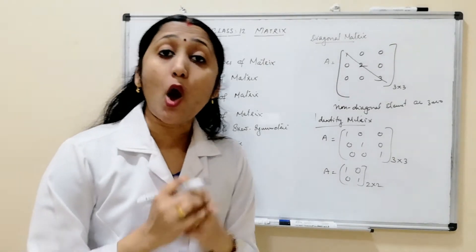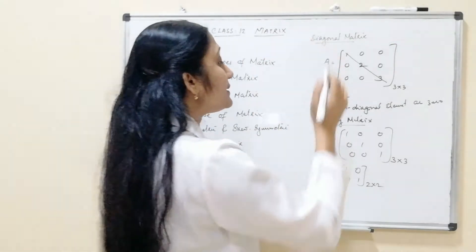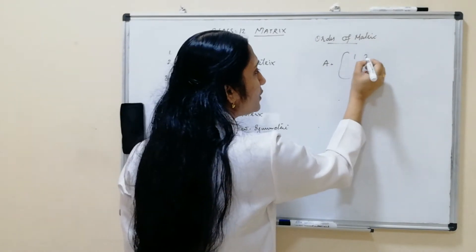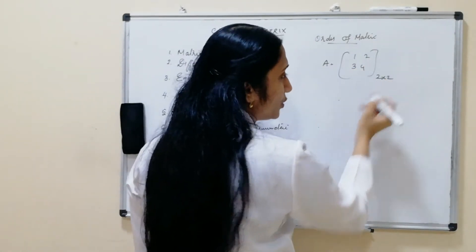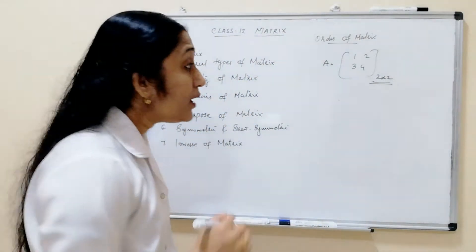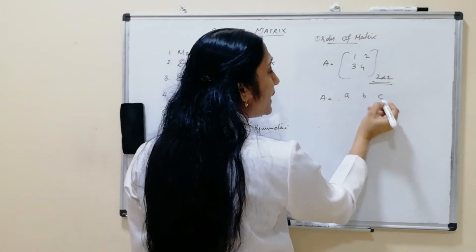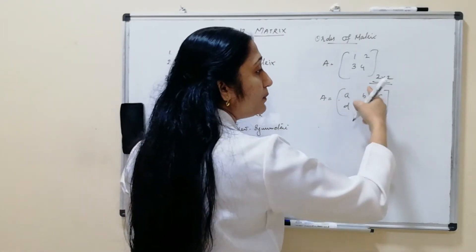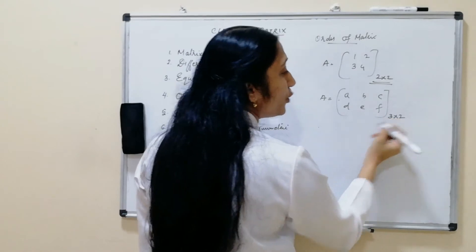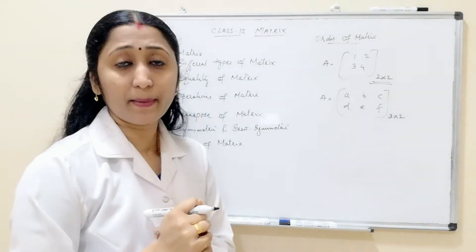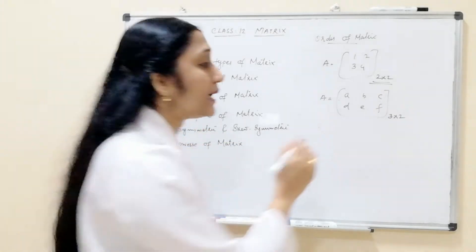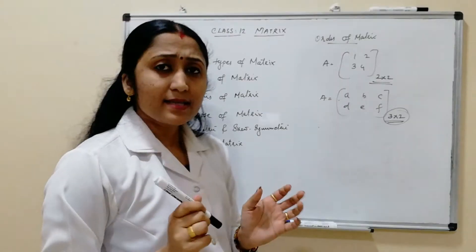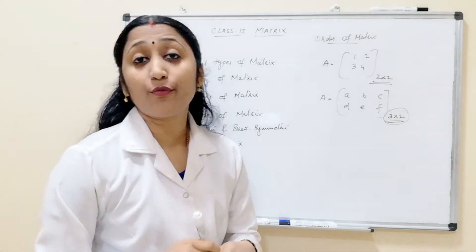The order of a matrix means the number of rows and columns. For example, A = [1, 2; 3, 4] has order 2×2. Another example: A = [a, b, c; d, e, f] has three columns and two rows, so the order is 3×2 — that means m×n represents the order of a matrix.